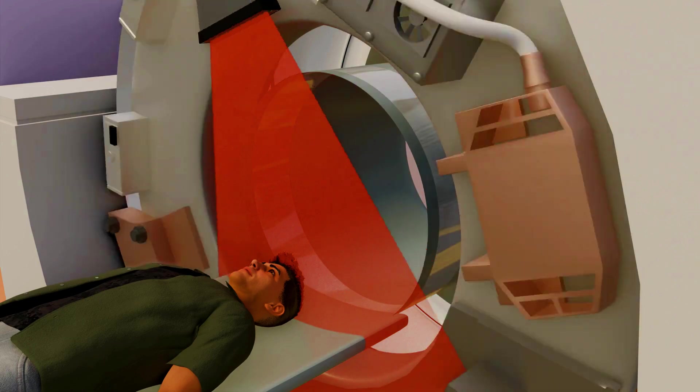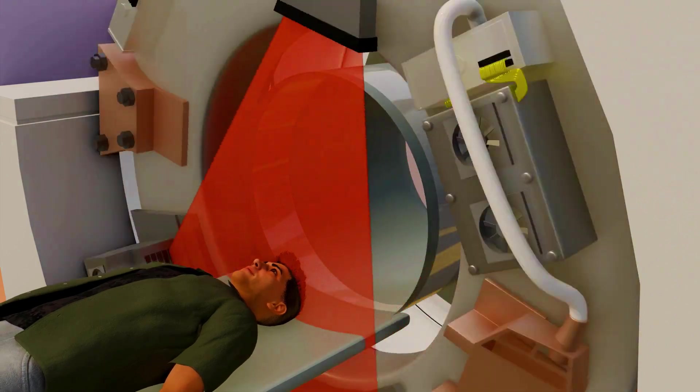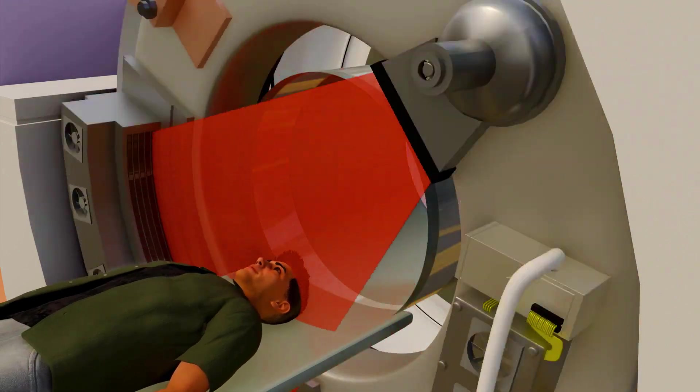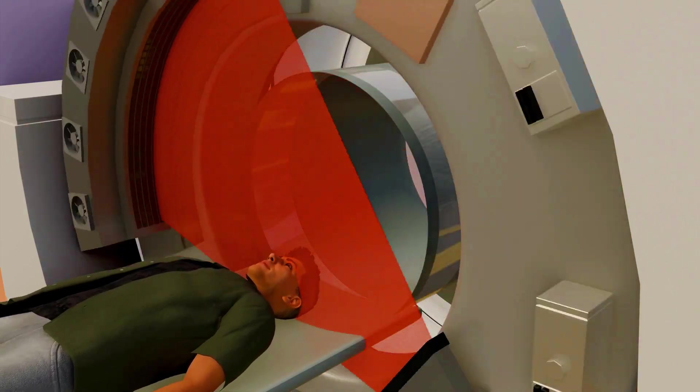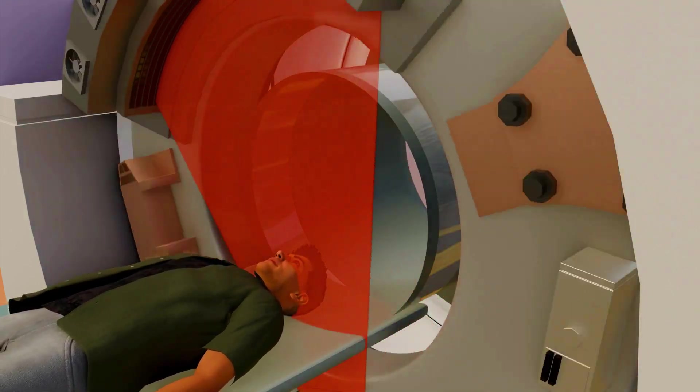Once a slice is scanned, the patient's table moves slightly forward to position the next slice for scanning. By scanning each slice, one at a time, the machine creates a complete 3D image of the area.